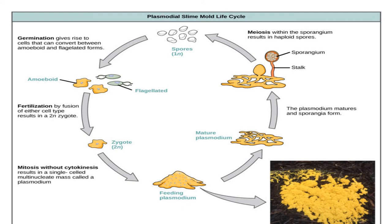This is why slime moulds are known as entirely different from the other groups — they have amoeboid-like properties, flagellated properties, and they form in aggregates. They are entirely different from the other members of this kingdom, and that is their peculiarity.